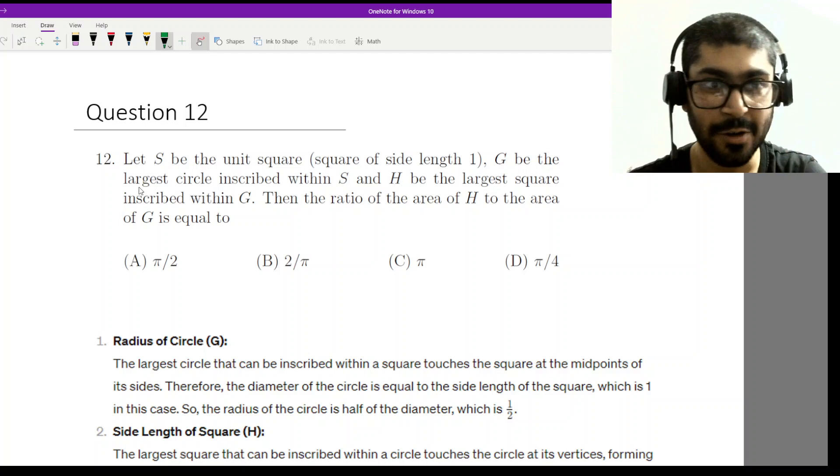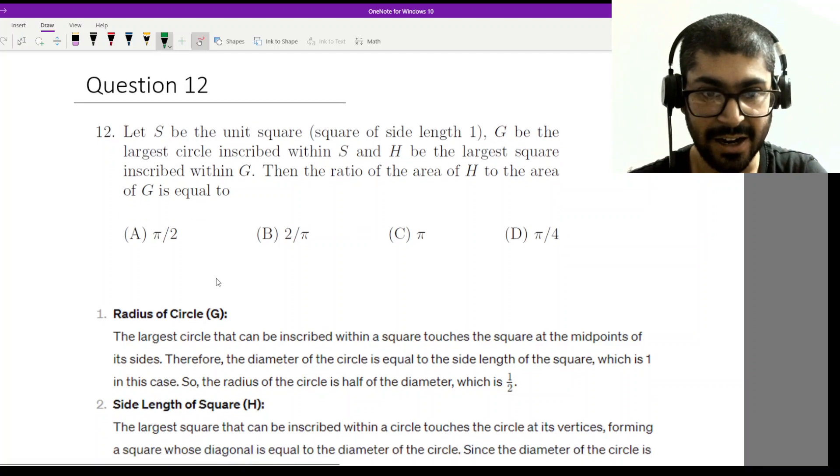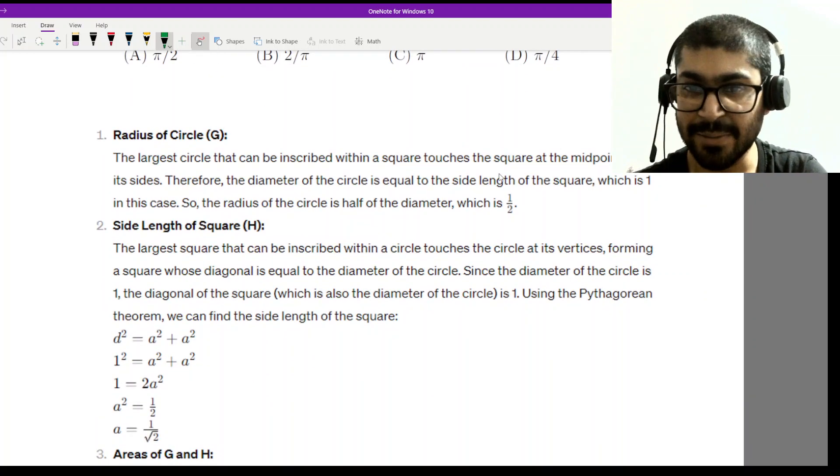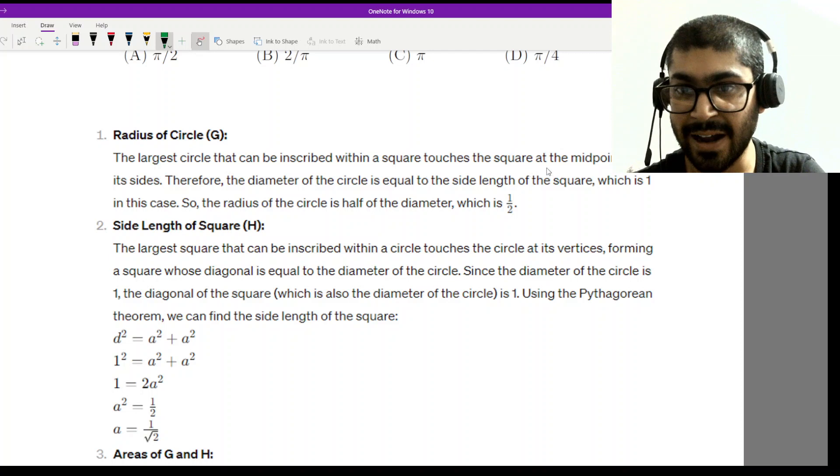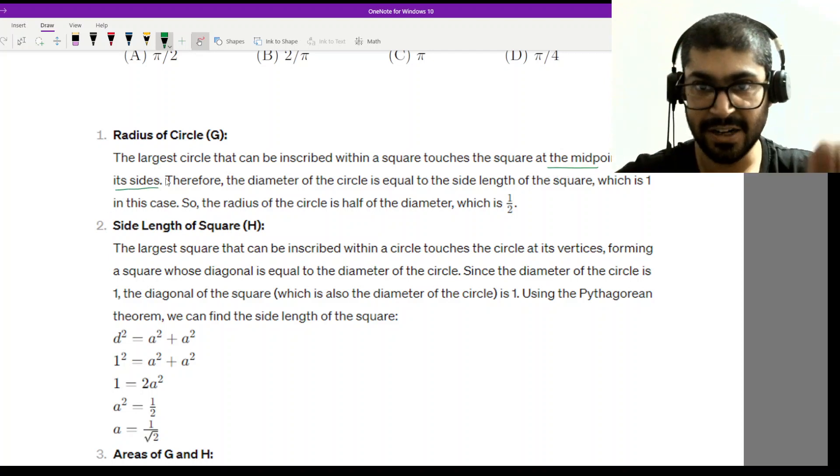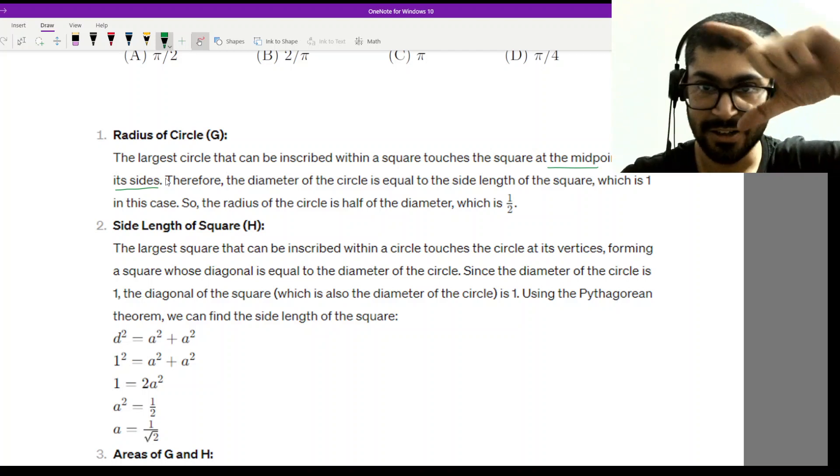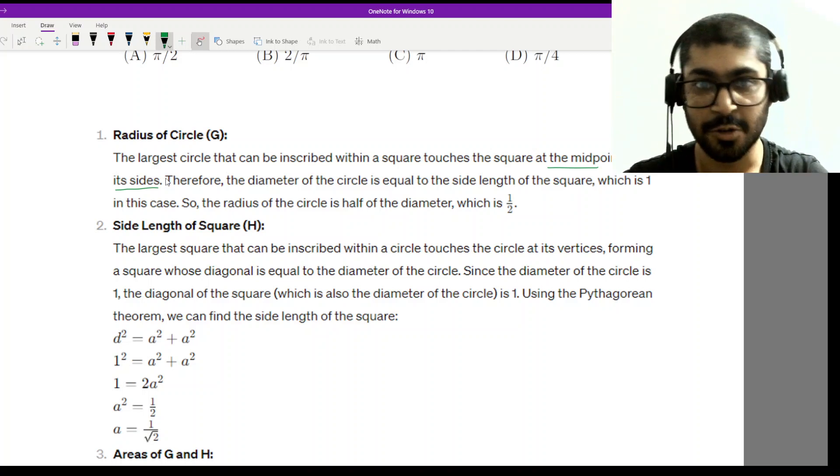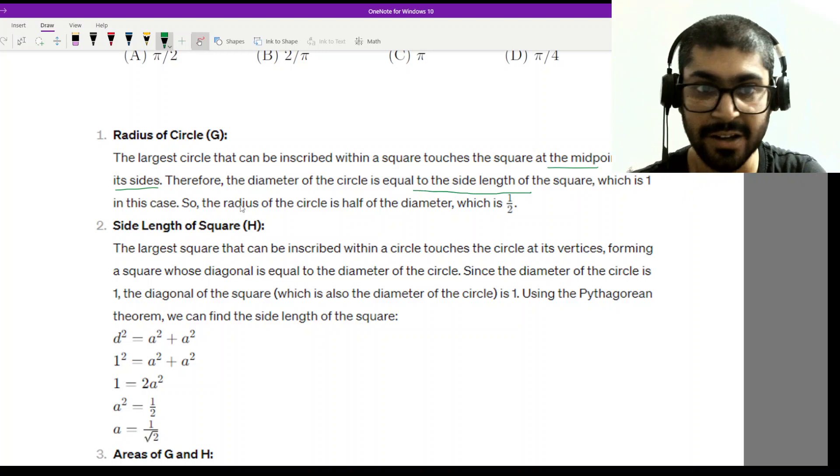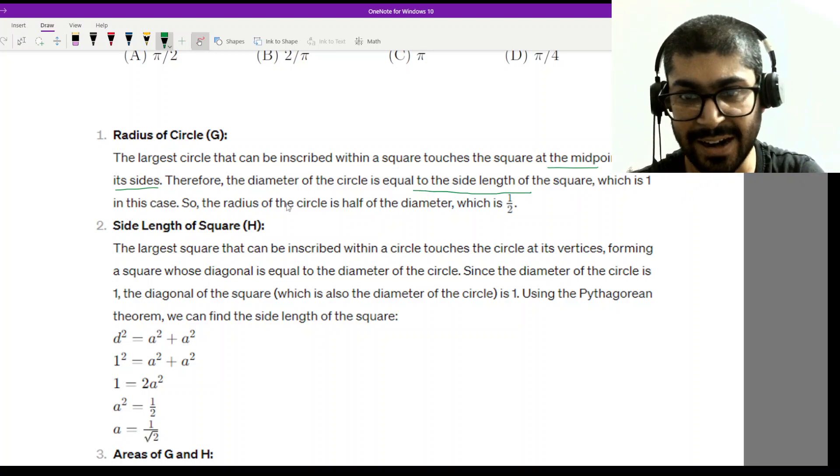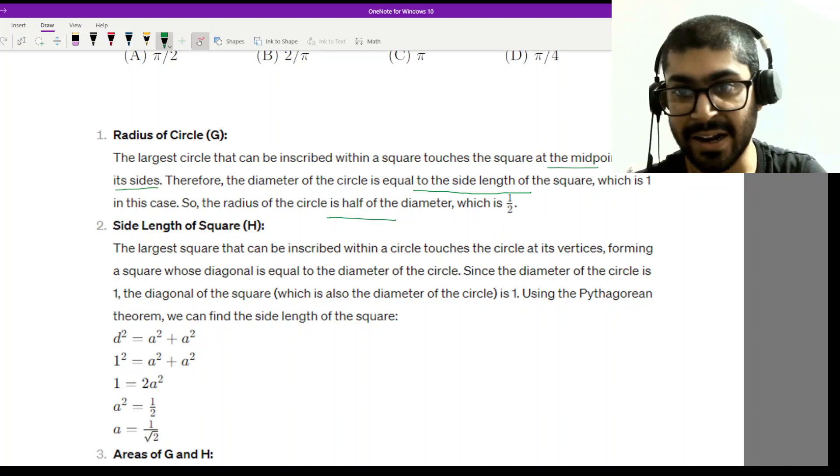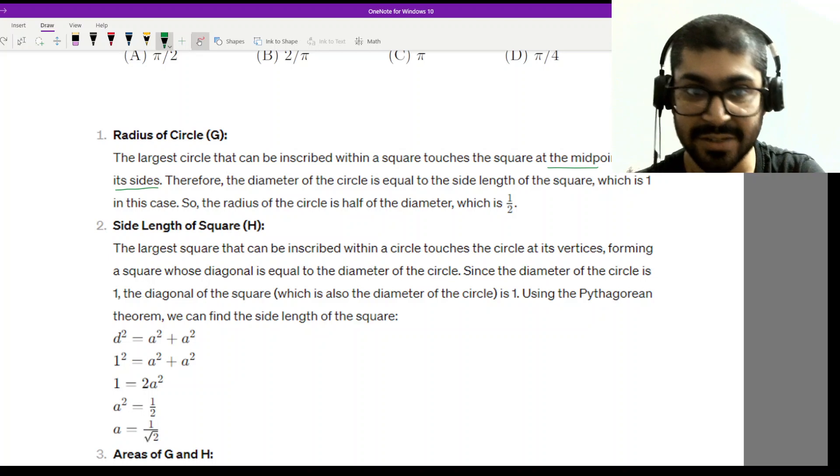Let's look at the solution. First, we calculate the radius of circle G. The largest circle that can be inscribed within the square touches the square at the midpoints of its sides. Therefore, the diameter will be equal to the side length of the square, which is 1. So the radius is half of the diameter, radius is 1/2. Let's remember the diameter of circle G equals 1 unit.